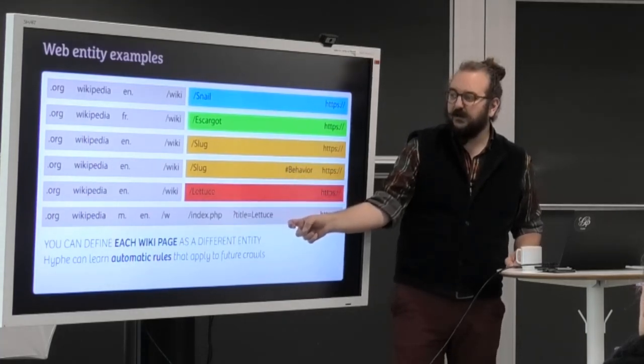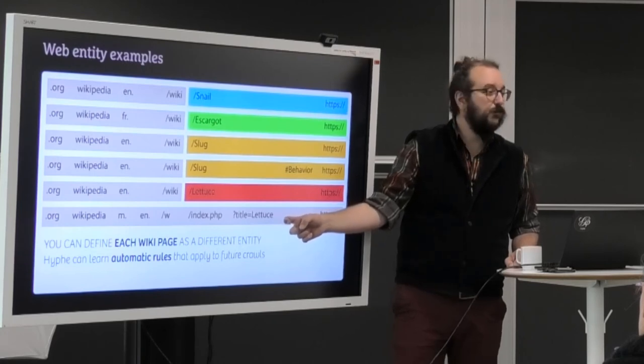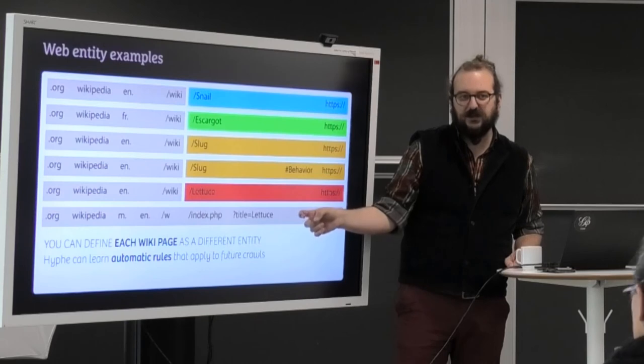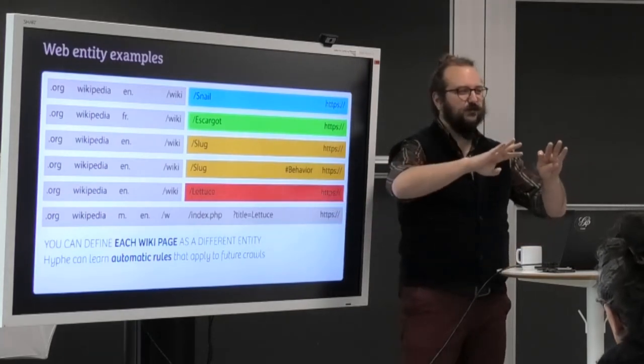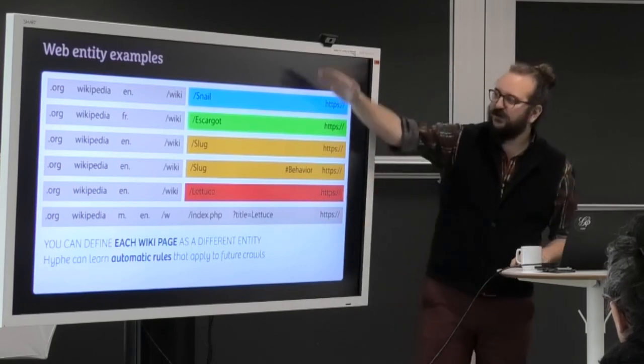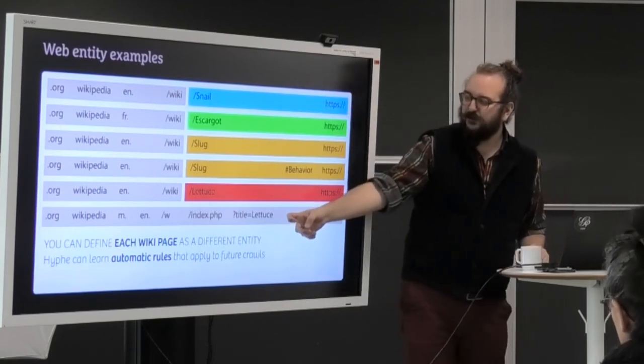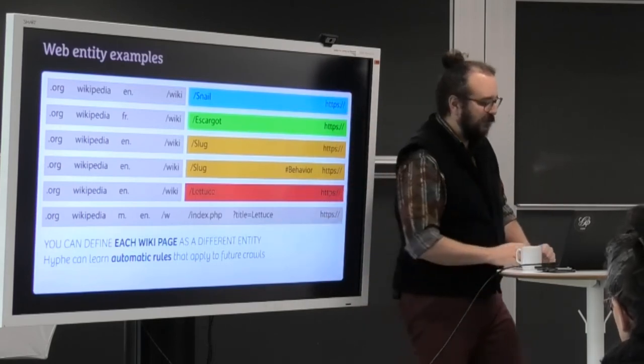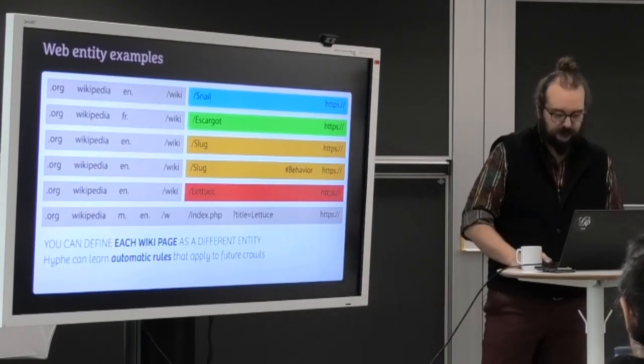So there is a limit to the system. Here it's complicated to have a joint rule for two different patterns at the same time. Whatever. So if we were to do the Wikipedia articles, we would have to do that separately for the mobile version of Wikipedia.